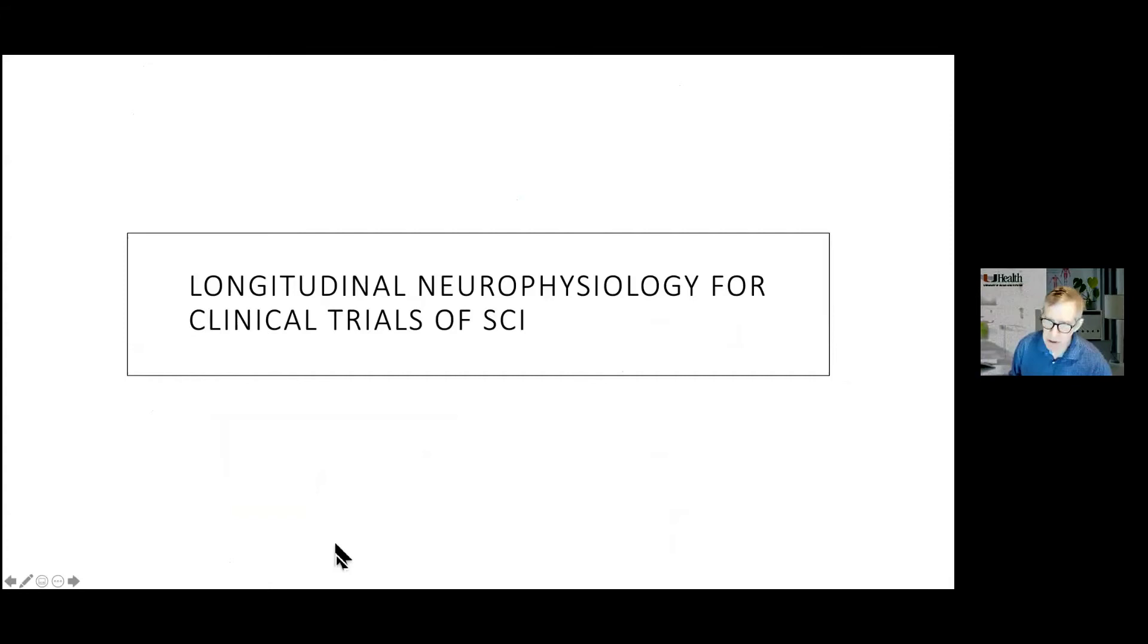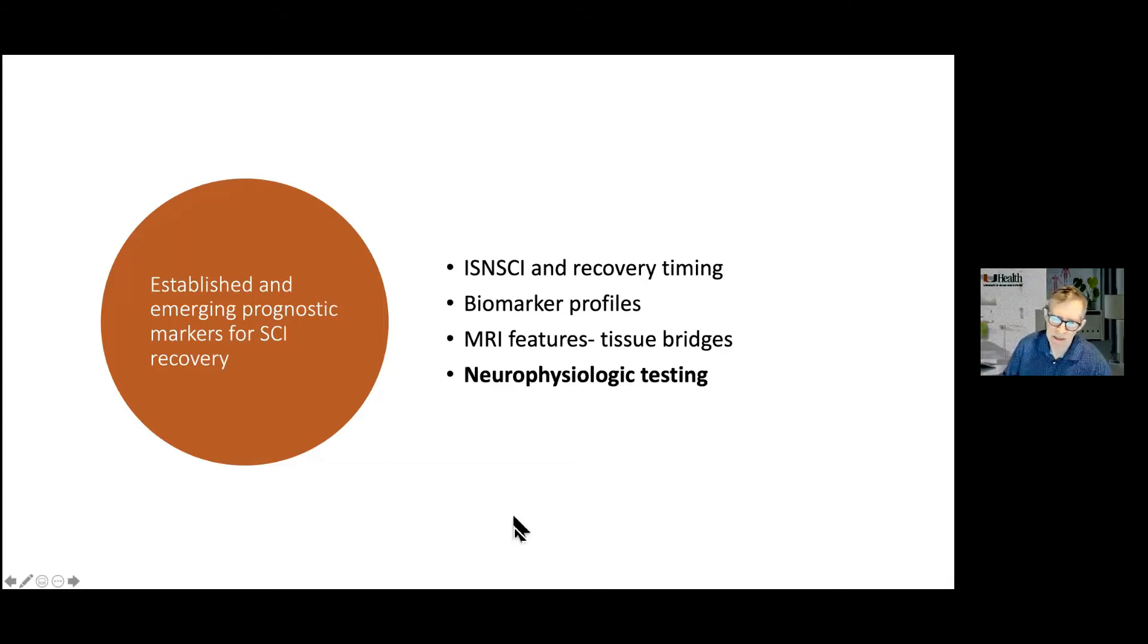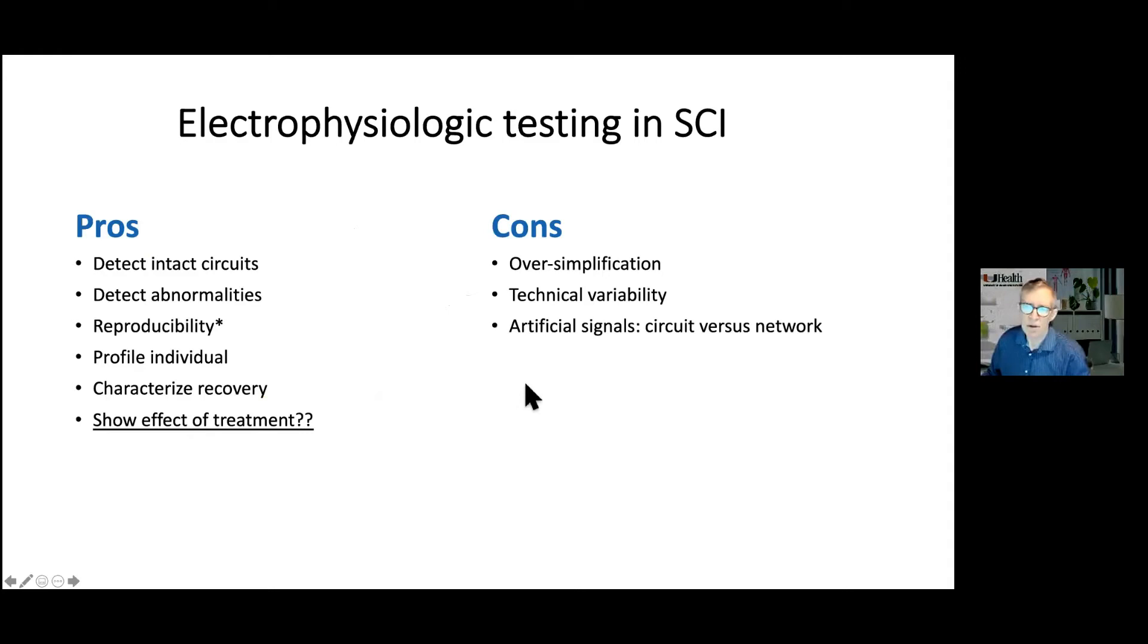Now we're going to talk about our clinical trial and the longitudinal neurophysiology that we did. And so the neurophysiological testing sort of fits into this issue of biomarkers that may be useful after spinal cord injury, sort of from a prognostic point of view, and also from a recovery point of view. There are good things and not so good things about doing electrophysiological testing after spinal cord injury. You can detect intact circuits. Usually these are quite reproducible if you do them correctly technically. You can actually profile an individual as per the residual connectivity that they have in their system, characterize recovery. And then what we hope as the future unfolds that we'll be able to show the effect of treatment.